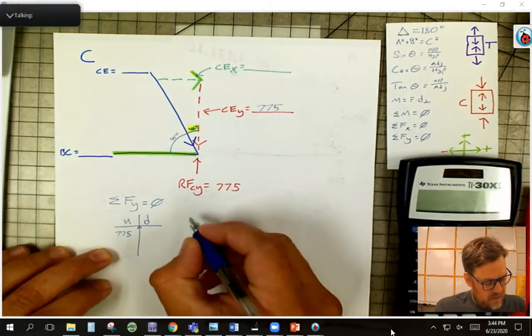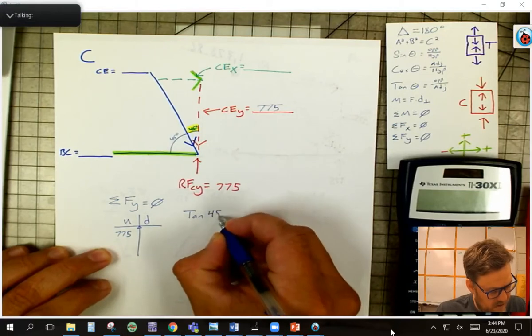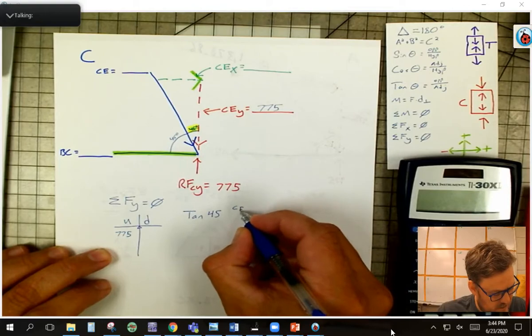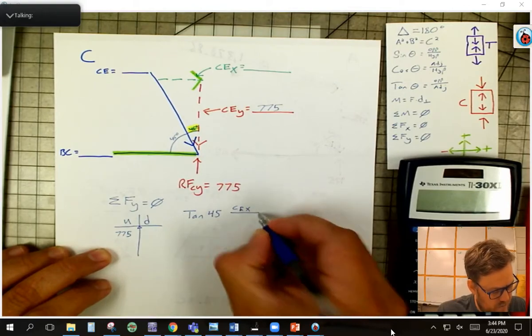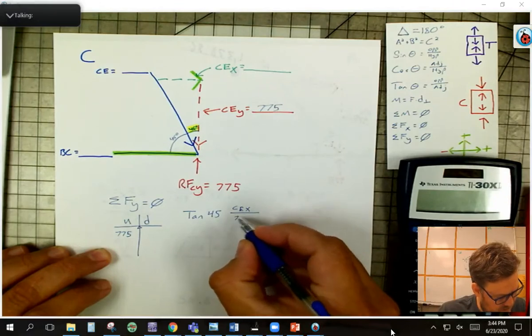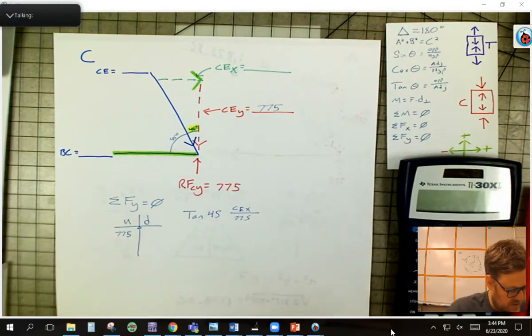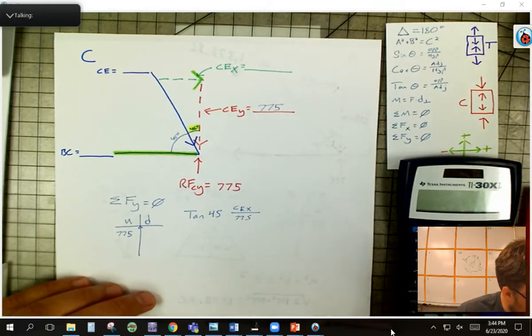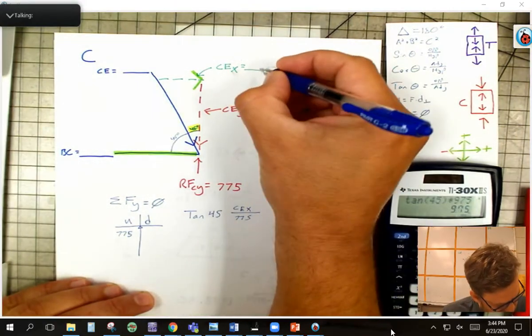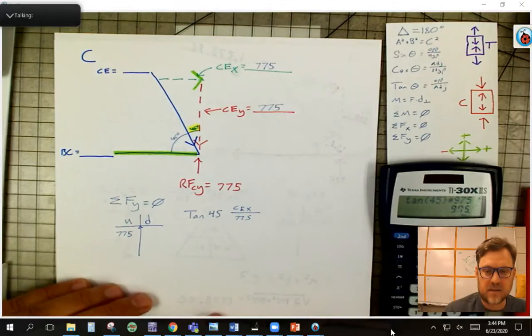So to do that, I'm going to go tangent of theta. In this case, it's 45, and I have CEX over the adjacent, which is 775. And so what I know is I can just take those things and multiply them together, and if you've already done that at home, you know it's a 45. And so you know this is also 775. I can kind of skip the math at this point.